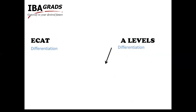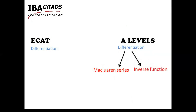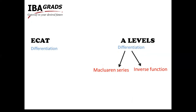Next is Differentiation. Students study differentiation in A-Levels, but McLaurin Series, which appears in NUST tests with 1–2 questions, is a Federal Board topic and is not included in A-Levels. Additionally, Inverse Functions appears in both NUST and NED, giving 1–2 MCQs. GIK also includes 1–2 MCQs from Inverse Functions.